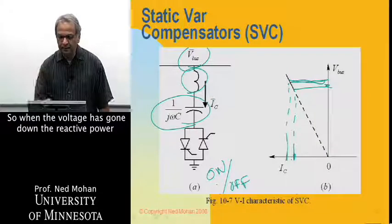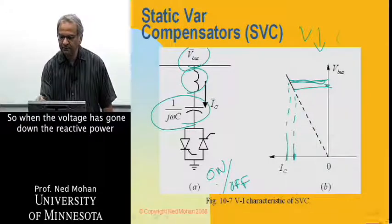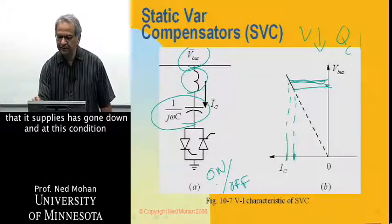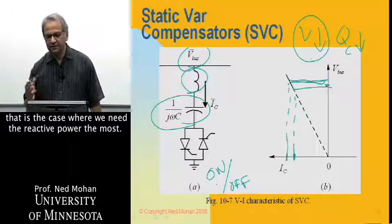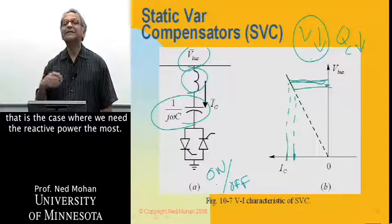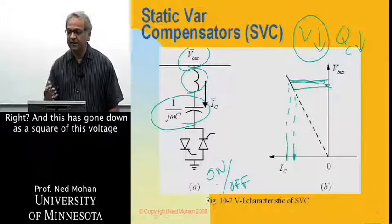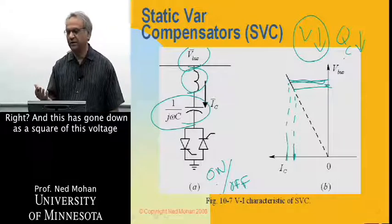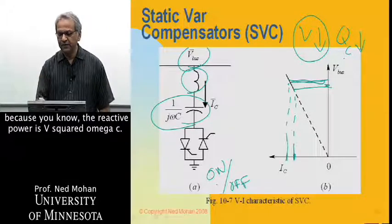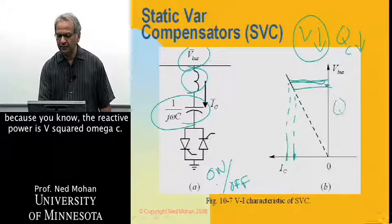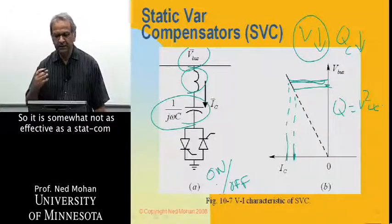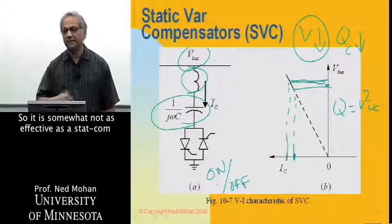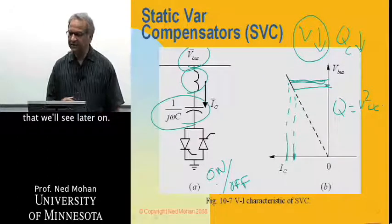When the voltage has gone down, the reactive power supplied has also gone down — and that is precisely the condition where we need reactive power the most. The reactive power goes down as the square of the voltage, since reactive power equals V² × ω × C. So this is somewhat less effective compared to a STATCOM that we will see later.